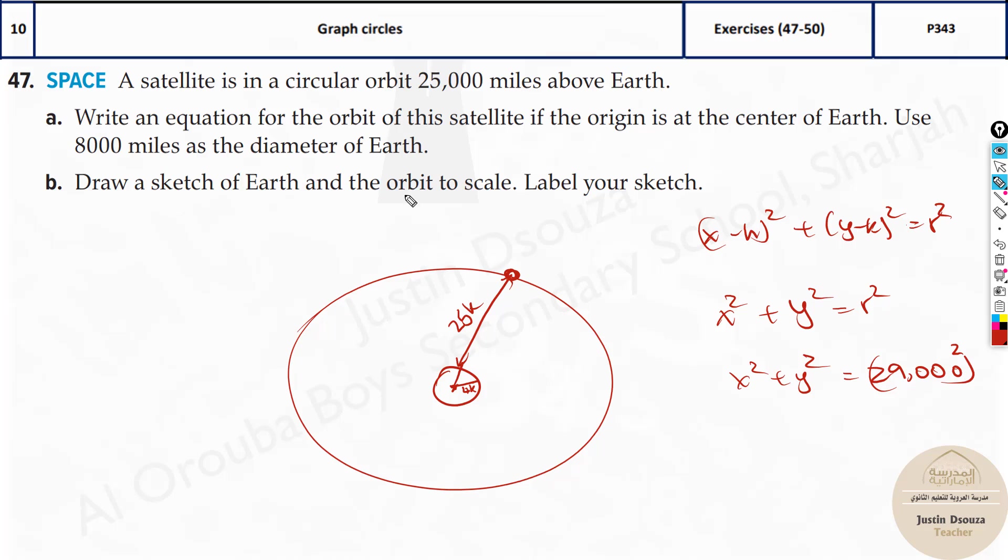Part B is to draw a sketch of the earth and the orbit to scale. Label your sketch. So you need to take a scale. Say I'll take 1,000 miles or 5,000 miles as 1 centimeter. Draw a radius. Just rough figure is enough. Draw two circles. This is 4,000. This is 25,000. The total radius over here would be 29,000.